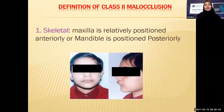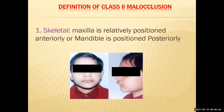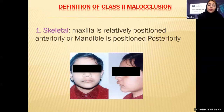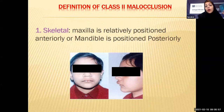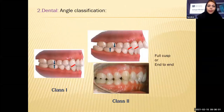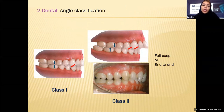What is called class 2 malocclusion? In the skeletal approach, we call a patient skeletally class 2 when the maxilla is relatively positioned anteriorly, or the mandible is positioned posteriorly — which means maxilla is protrusive, or mandible is retrusive, or both. In the dental approach, we have Angle's classification, which was introduced by Professor Angle. We have three different types: class 1, class 2, and class 3.